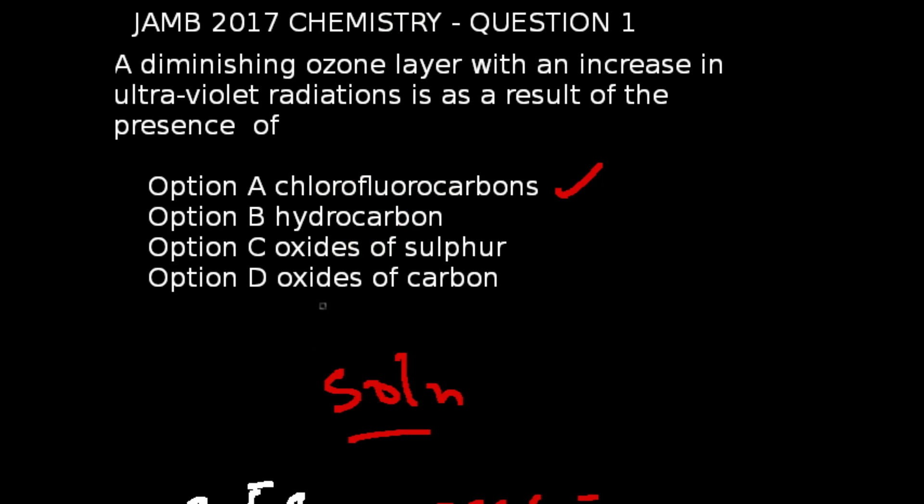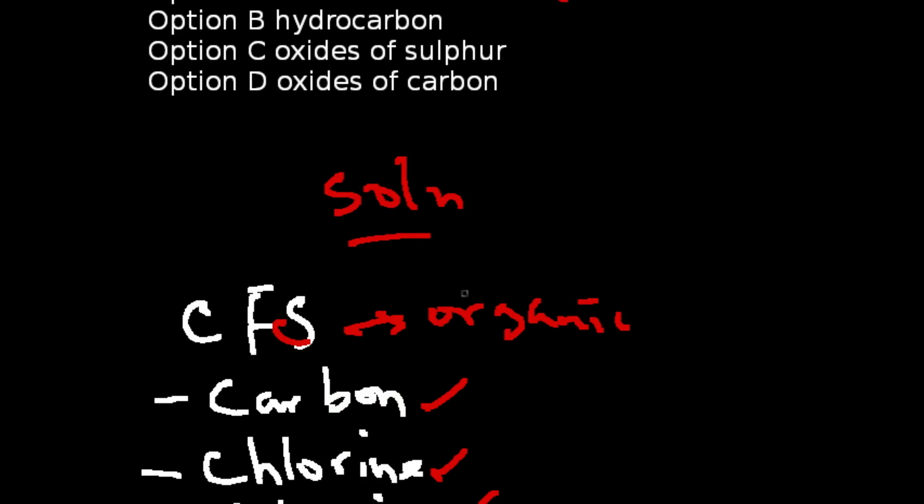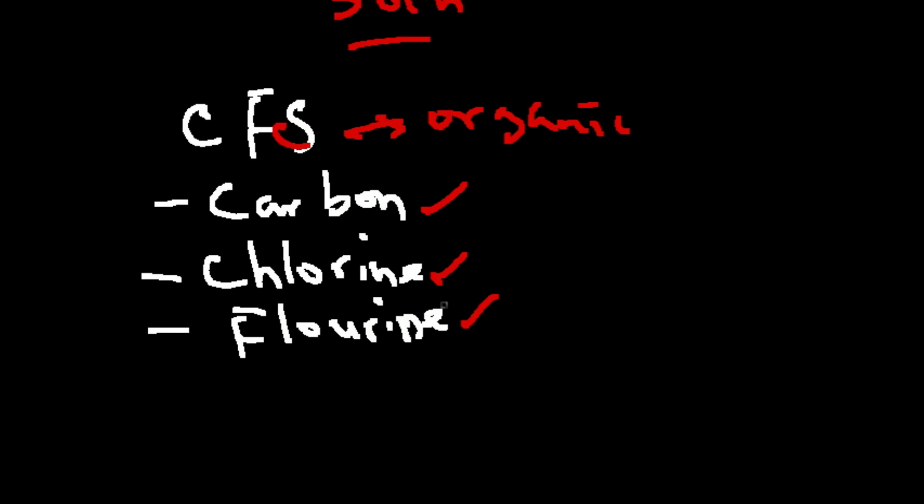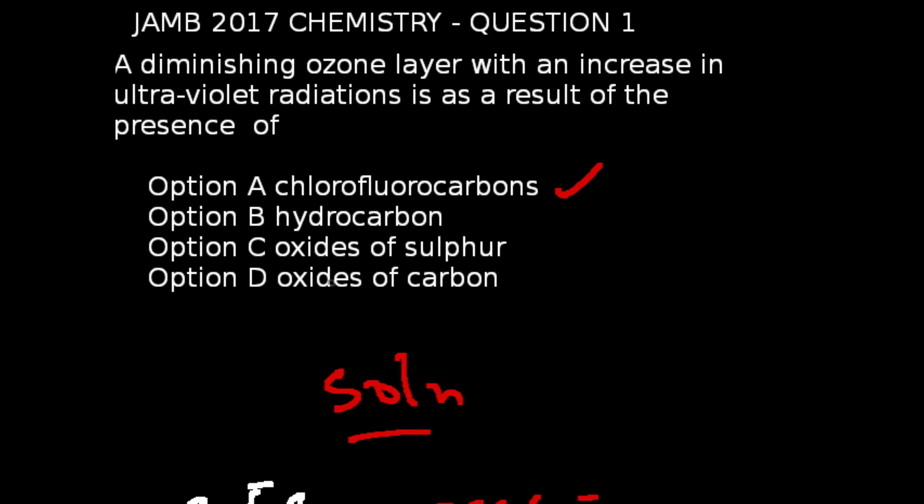What CFCs does is as it gets to the atmosphere, chlorine atoms are released which destroys the ozone layer and allow the sun's direct energy to reach the surface of the earth, which we now call ultraviolet radiations.